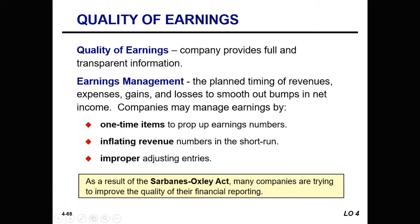Also included in this chapter is some discussion about the quality of earnings. Earnings management is what we call the planned timing of revenues, expenses, gains, and losses to smooth out bumps in our net income. Companies engage in earnings management through one-time items that can prop up earnings numbers, inflating revenues in the short run, or improper journal entries.